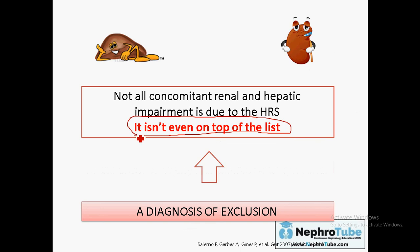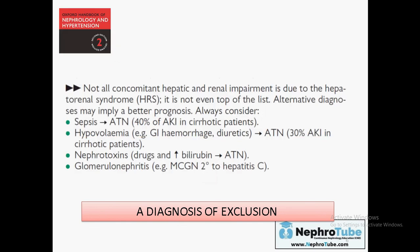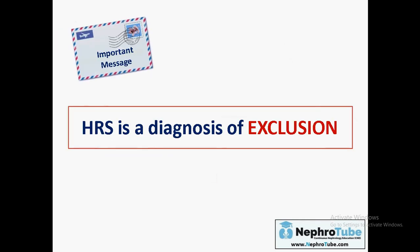Hepatorenal syndrome is not at the top of the list of diseases causing renal impairment in a patient with liver disease — not all concomitant renal and hepatic impairment is due to hepatorenal syndrome. It is a diagnosis of exclusion. Alternative diagnoses may be present, such as sepsis, hypovolemia due to hemorrhage, diuretics, nephrotoxins, glomerulonephritis, or any other cause that may affect the kidney in hepatic patients.